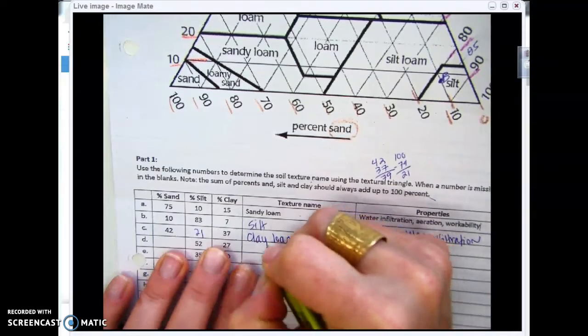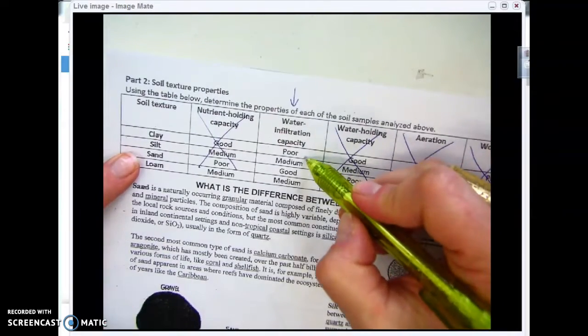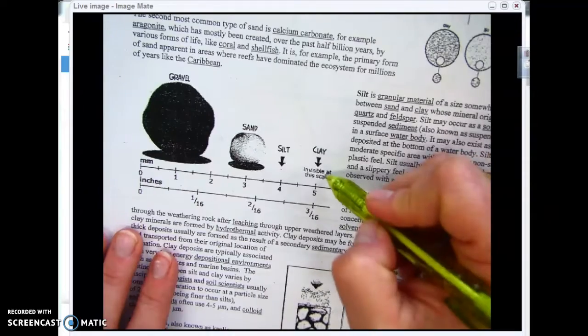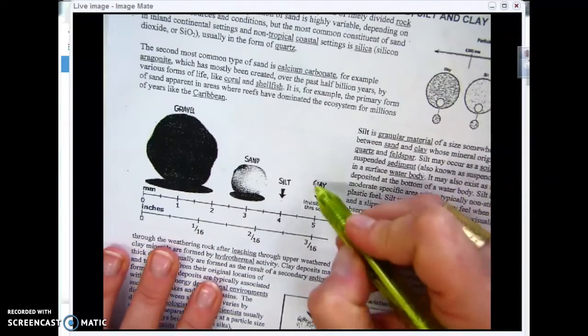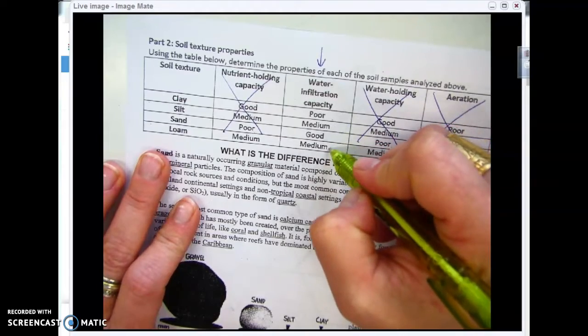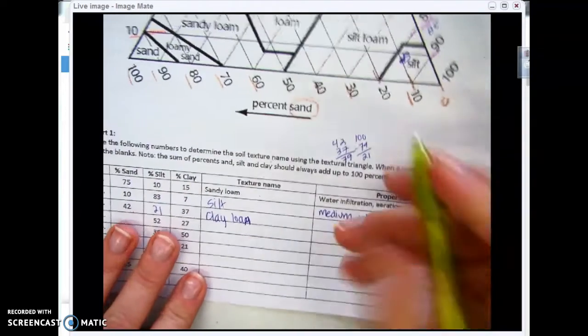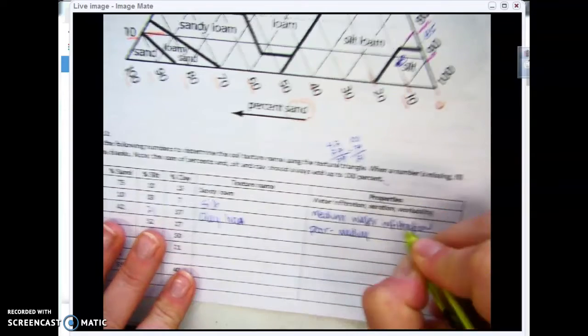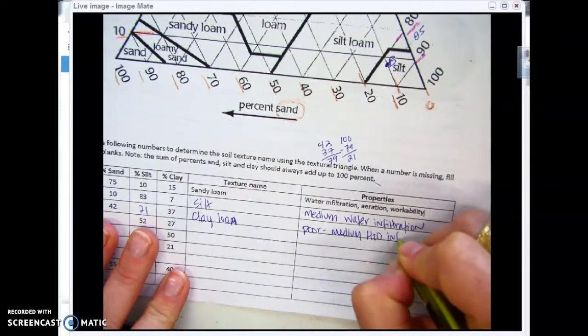For this one, I'm going to look at both clay and loam. Clay has a poor infiltration capacity because clay particles are so teeny tiny, and water can't move through it very easily. I think we also said loam, which is medium. So we're going to write poor to medium water infiltration for this one.